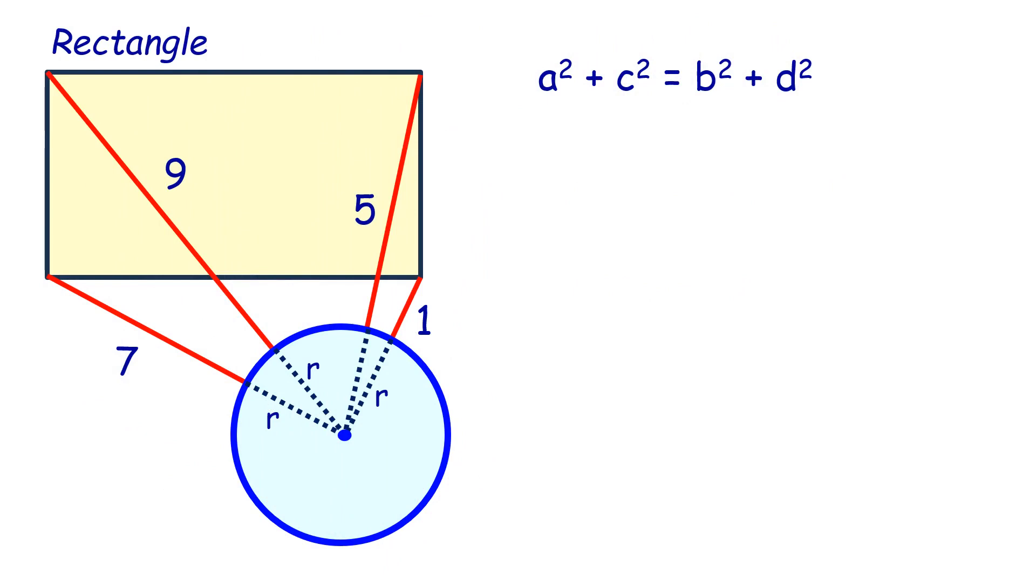Let's see how we can use the British Flag Theorem here. This is the external point from which we are measuring the distances. Distance a in this case will be 7 + r, distance b will be 9 + r, c will be 5 + r, and d will be 1 + r.